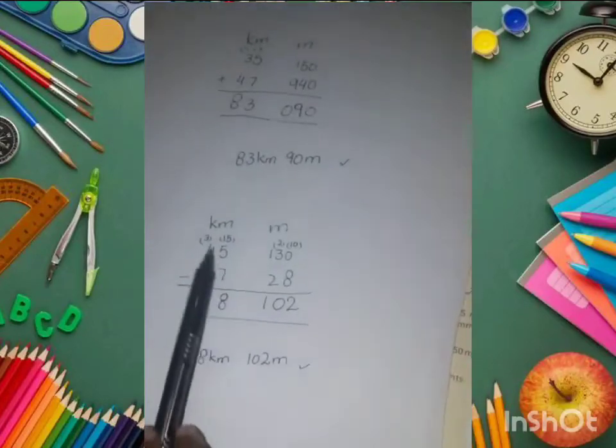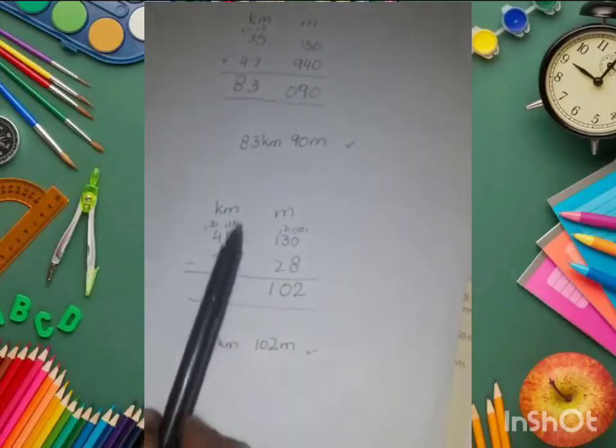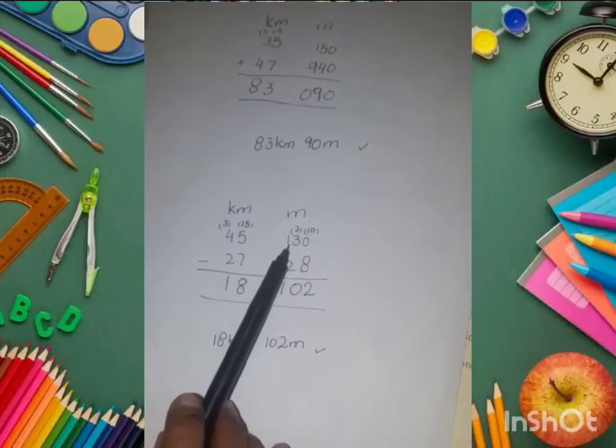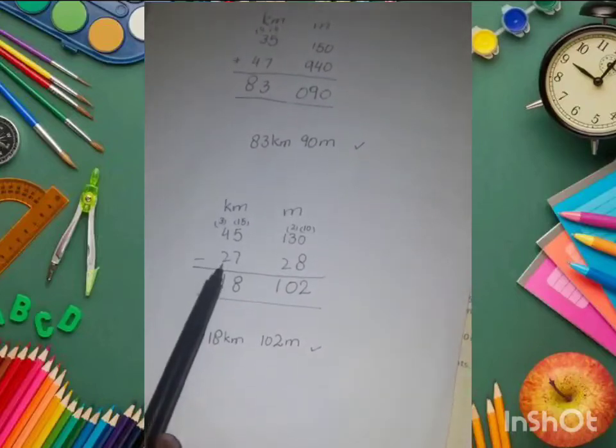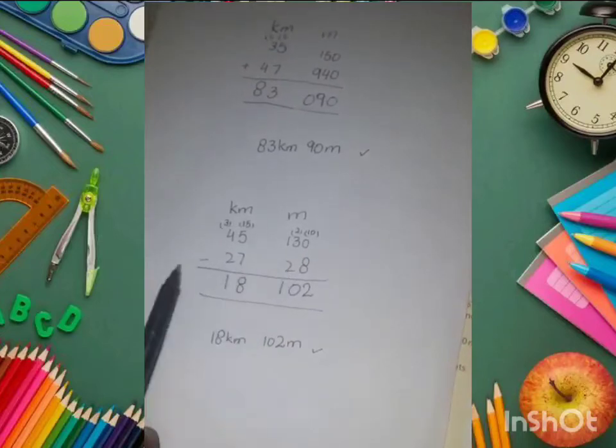Now we subtract this question. First, we arrange in columns: kilometers and meters. 45 kilometers 130 meters minus 27 kilometers 28 meters.